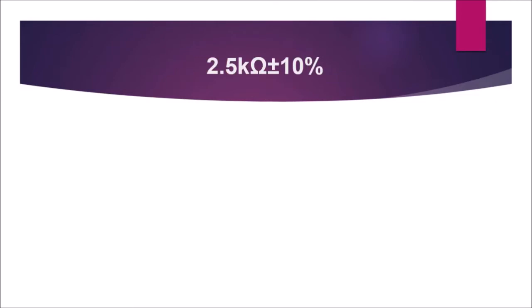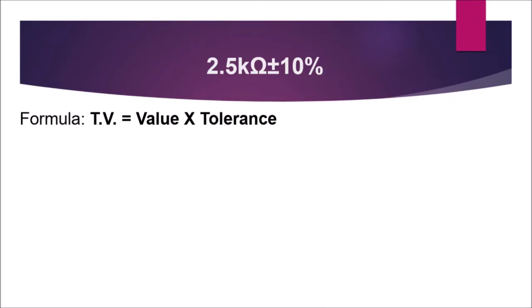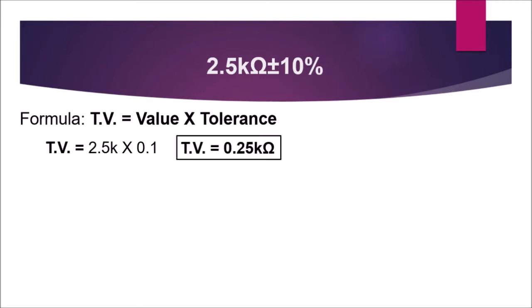Let's have another example. Suppose we have 2.5 kilo-ohms ±10%. First, we're going to find the tolerance value using TV = value × tolerance. The value is 2.5 k multiplied by 0.1, which is 10%. Note that I keep the prefix k to indicate the value is in kilo. So 2.5k × 0.1 gives us a tolerance value of 0.25 kilo-ohms.